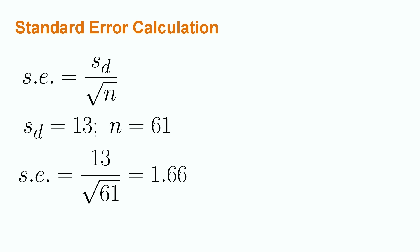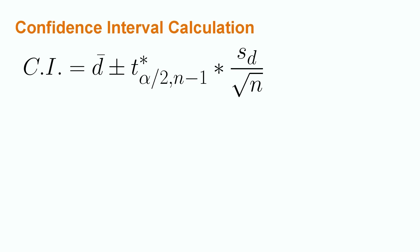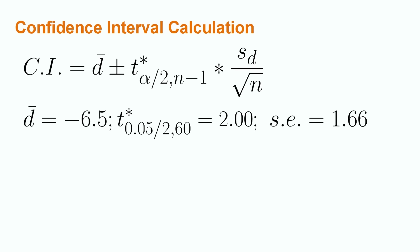We now have all the values that we need to construct our confidence interval. Recall that the confidence interval is bounded by the sample mean difference plus or minus the t statistic times the standard error. In summary, the relevant numbers for this calculation are the sample difference d bar of negative 6.5, the t multiplier of 2, and the standard error of 1.66. Pause the video for a moment to see if you can use this information to build the confidence interval yourself.